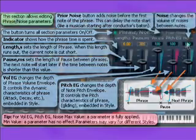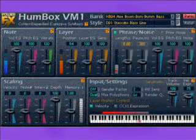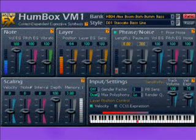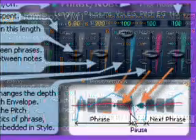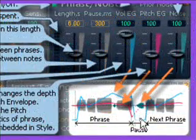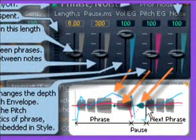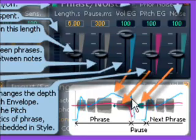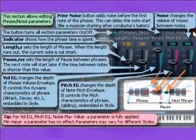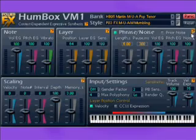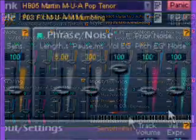If you are playing non-legato and there are sufficient pauses between notes, VM1 might think that a new phrase begins, and so it will start amplitude and pitch envelopes and insert noises. These section controls allow you to easily adjust phrase mode and the insertion of noises to your specific tasks.